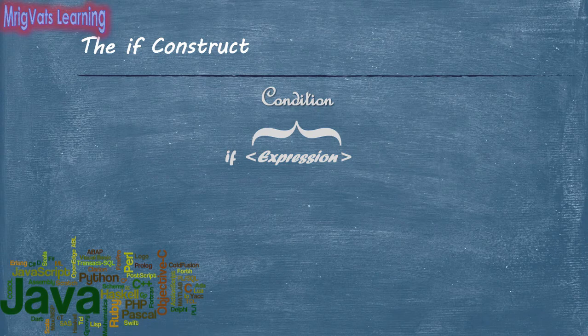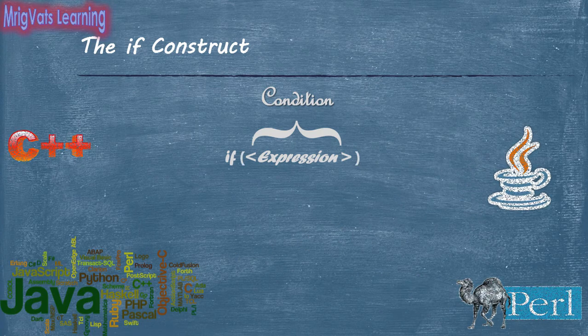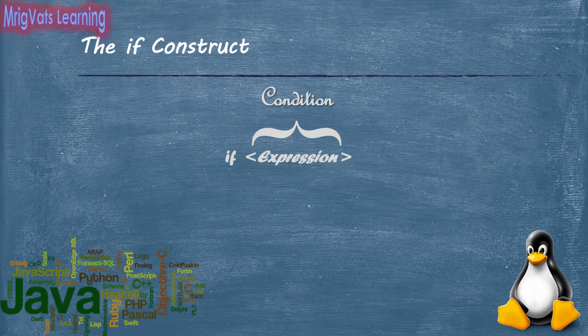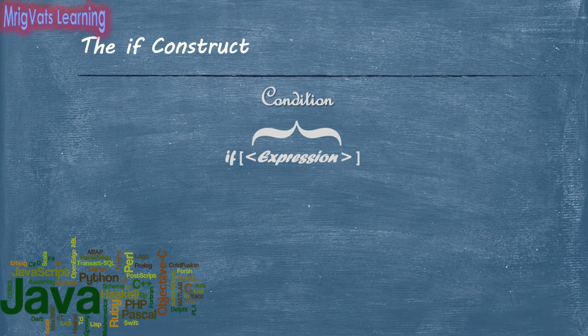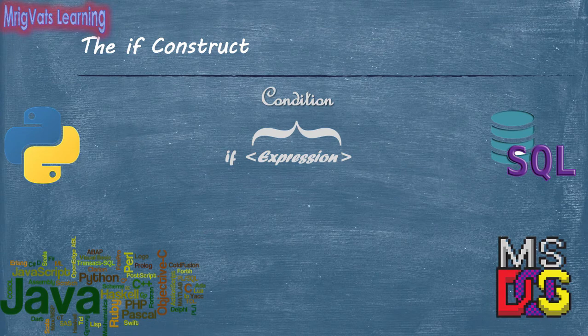In some of the programming languages, such as C++, Perl, and Java, you use the condition in parentheses. Similarly, in Unix shell scripts, you enclose the boolean expression within square brackets. However, in some of the programming languages, such as Python, SQL, and DOS batch files, you do not need any parentheses to enclose the boolean expression.